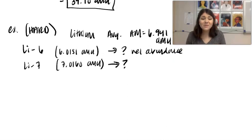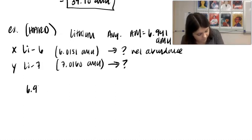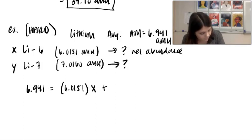So the math is going to get a little weird. So let's set up and I'm going to use the variables X and Y for the relative abundance. So here we know the average atomic mass. I'm going to take the mass of the first one, X plus 7.0, 160 Y.